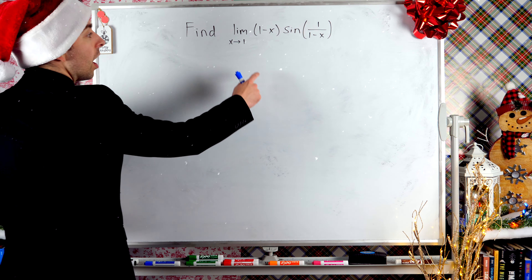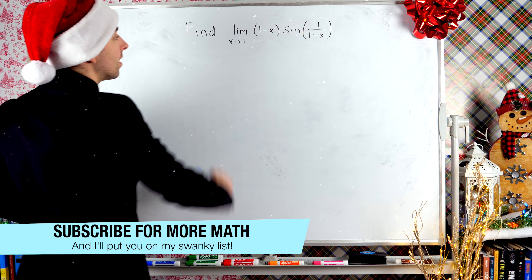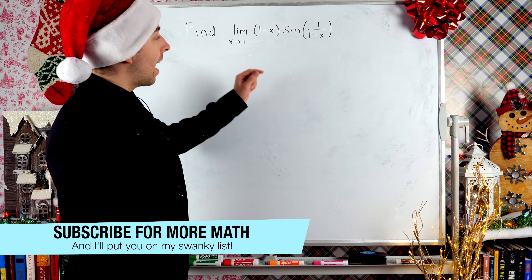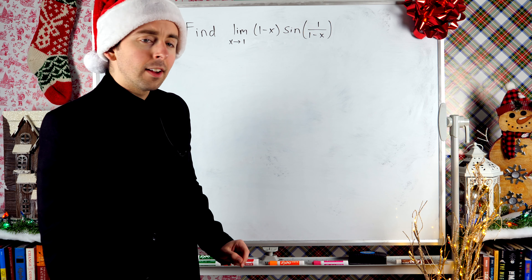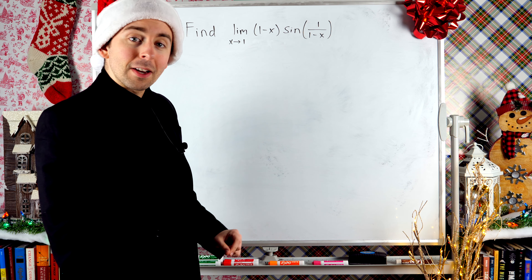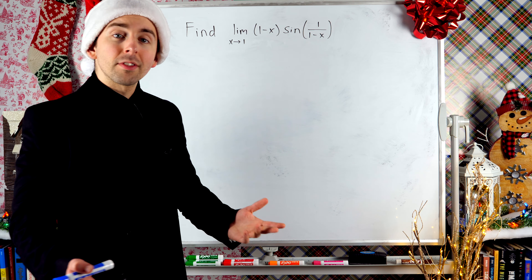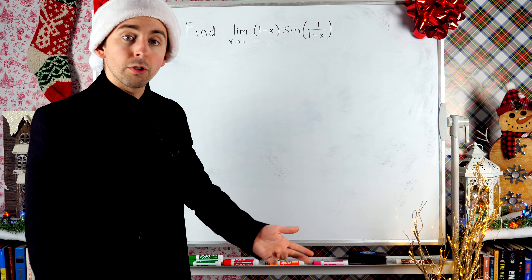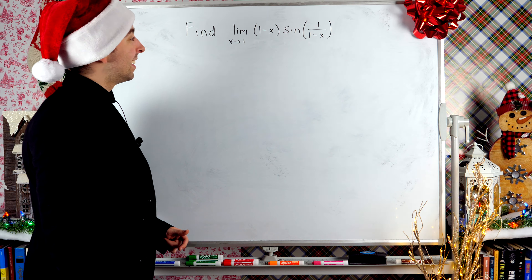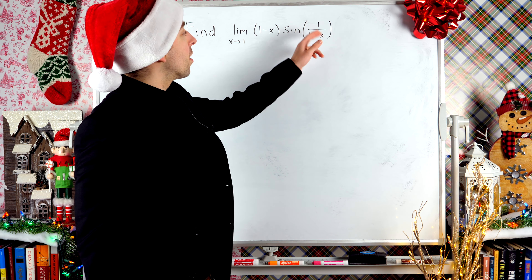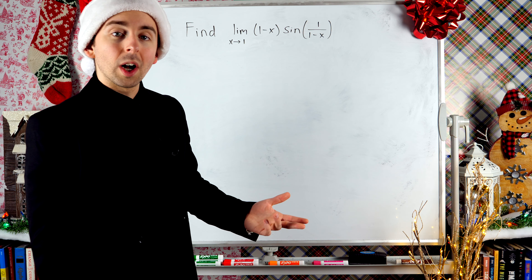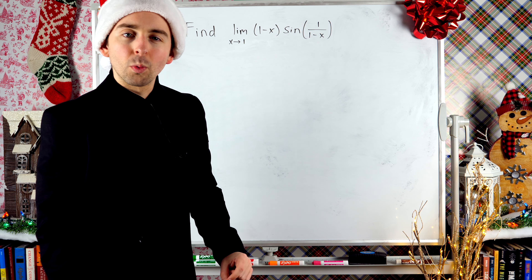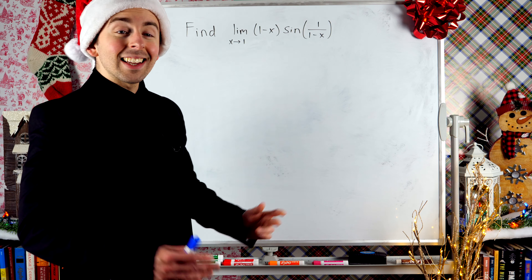What is the limit of (1 - x) times sine of 1/(1 - x) as x approaches one? This is a pretty good trigonometric limit problem. Your first thought should be: can we evaluate the limit with substitution — just plug in one for x? That's not going to work because inside the sine function we have 1/(1 - x), which becomes 1/0 if we plug in one for x. So that doesn't work.